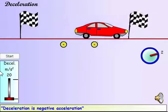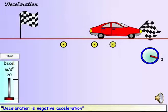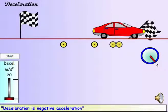Deceleration is negative acceleration. At every instant, the velocity of the car reduces uniformly. When a car moves after starting, it accelerates as the velocity increases from zero. When a car comes to a halt, it decelerates as the velocity reduces to zero.